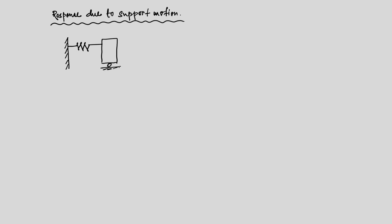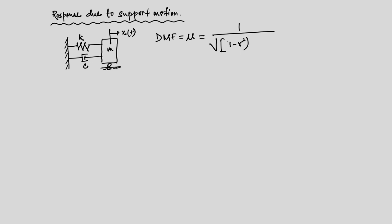We have this combination of mass, spring, and dashpot — mass, stiffness, and damping — and x of t, where the dynamic amplification factor DMF is defined by this non-dimensional number: square root of 1 minus r squared, whole squared, plus twice eta r.